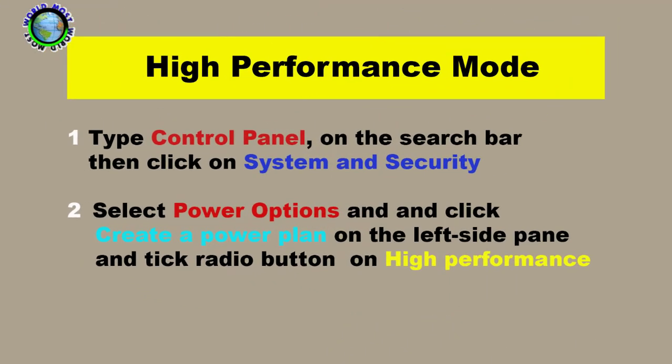Your PC might be working slow because you have diminished its capability to utilize resources by opting for the power saving mode. To overcome this issue, use the power saving mode when running on battery and go for high performance mode when it's connected to a power socket.